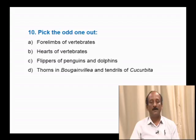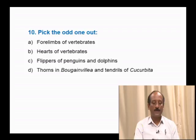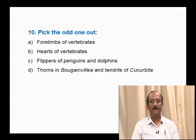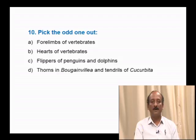Question number 10: Pick the odd one out — forelimbs of vertebrates, hearts of vertebrates, flippers of penguins and dolphins, thorns of Bougainvillea and tendrils of Cucurbita. Among the options, forelimbs of vertebrates, hearts of vertebrates, and thorns/tendrils are all examples of homologous organs. But flippers of penguins and dolphins are an example of analogous organs. Hence, the correct answer is option C.